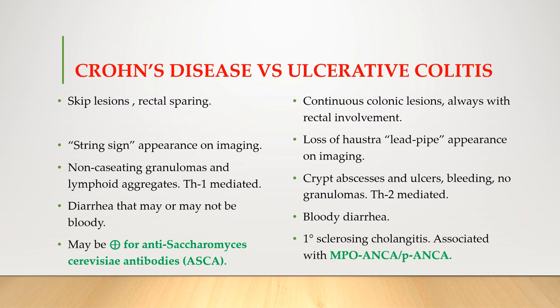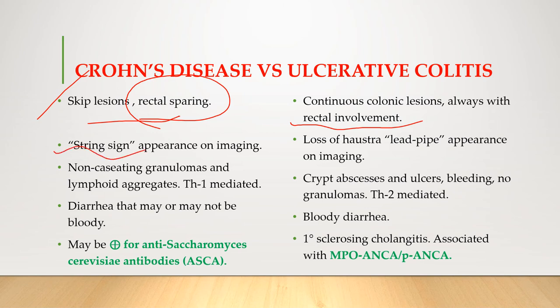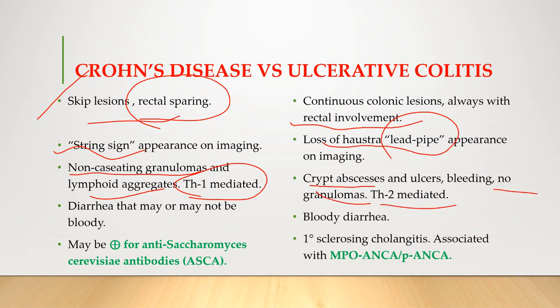More specific differences: Crohn's disease shows skip lesions with mainly rectal sparing, while ulcerative colitis has rectal involvement with continuous colonic lesions. In barium contrast enema imaging, Crohn's disease appears as a string sign whereas ulcerative colitis shows loss of haustra leading to a lead pipe appearance. Crohn's disease features non-caseating granulomas, lymphoid aggregates, and is TH1-mediated. Ulcerative colitis shows crypt abscesses and ulcers with bleeding, no granulomas, and is TH2-mediated.